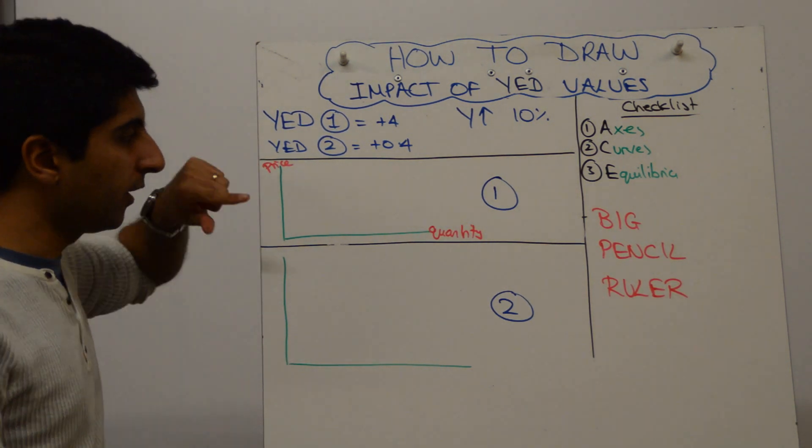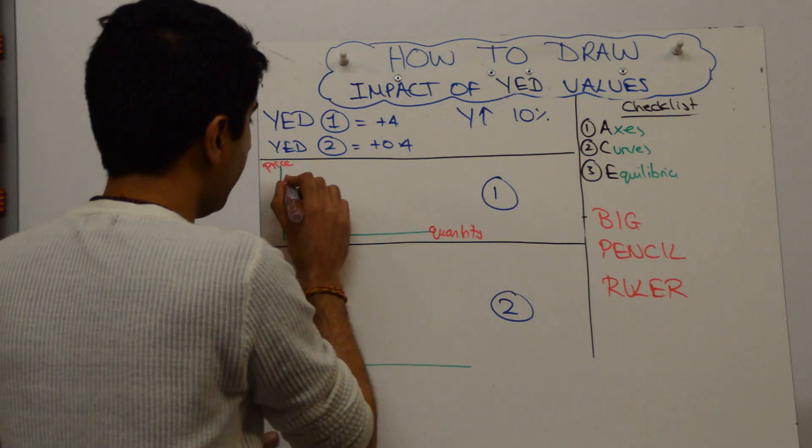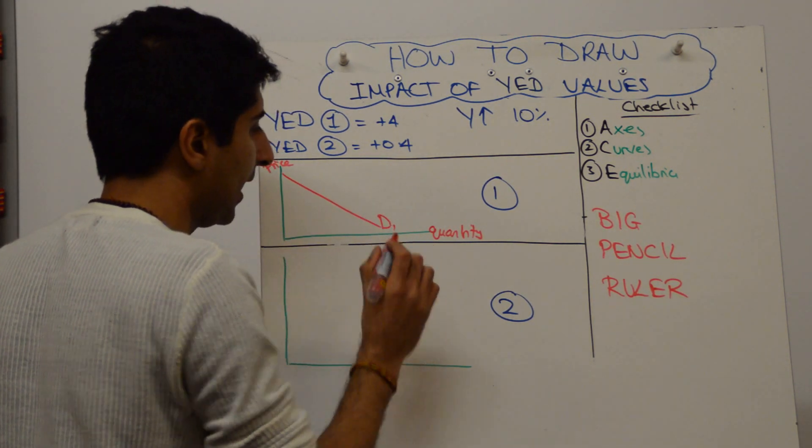Start by labeling the axes, price and quantity. We want to show a demand curve, so draw that and label it D1.